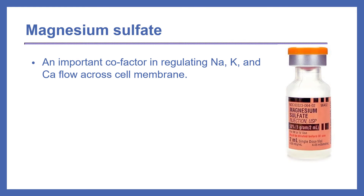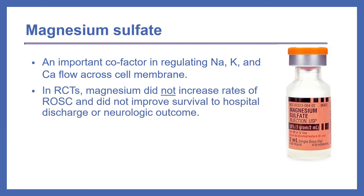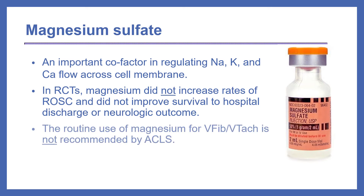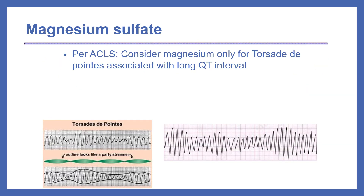Magnesium sulfate is often requested during code blue emergencies. It is an important cofactor in regulating sodium, potassium, and calcium flow across the cell membrane. However, in randomized controlled trials, magnesium did not increase rates of ROSC and did not improve survival to hospital discharge or neurologic outcome. Therefore, routine use of magnesium for VFib or VTac is not recommended by ACLS. Per ACLS, we can consider using magnesium only for torsade de pointes associated with long QT interval.